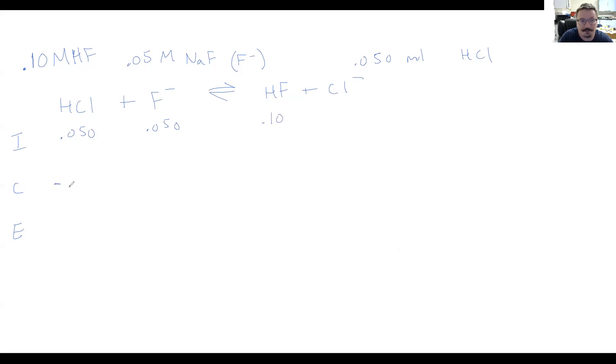These react in a one-to-one ratio. Which number is smaller? Well, they're the same number. So we're going to react away that much of that, this much of that. For every one of these that reacts with one of these, we get one of those. So we see that then at equilibrium, this is zero, this is zero, this is 0.15.